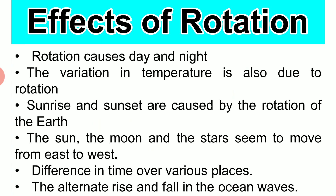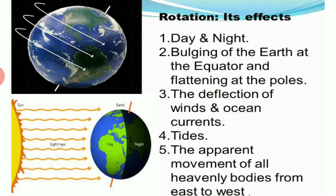Fourth, the celestial bodies — the sun, the moon and the stars — seem to move from east to west. This is because the earth spins from west to east. The sun is stationary and we are moving with the earth at the same speed. It is like when one is sitting in a fast moving train — the trees and houses appear to move at fast speed whereas actually they are stationary and we are moving with the train.